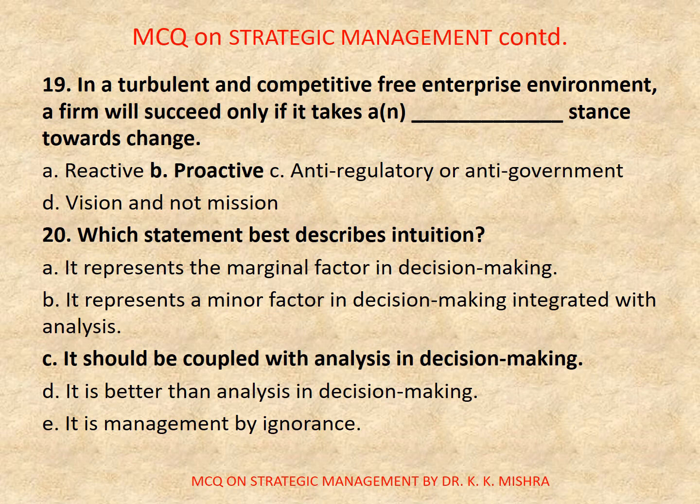Question 19: In a turbulent and competitive free enterprise environment, a firm will succeed only if it takes a proactive stance towards change. A, reactive; B, proactive; C, anti-regulatory or anti-government; D, vision and not mission. Correct option is B: proactive.